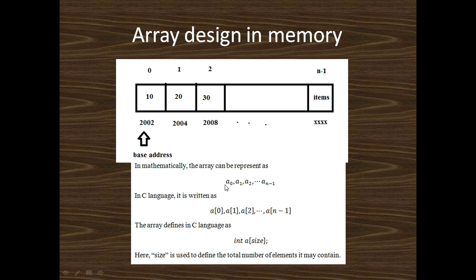Mathematically, an array can be represented as a[0], a[1], a[2], ... a[n-1]. The name of the array is the same but the index number differs. In C language, the same is written as a[0], a[1], a[2], ... a[n-1] using square bracket notation. Both notations represent the same thing.